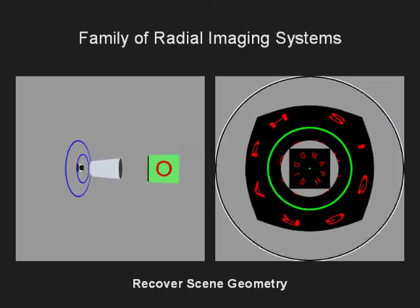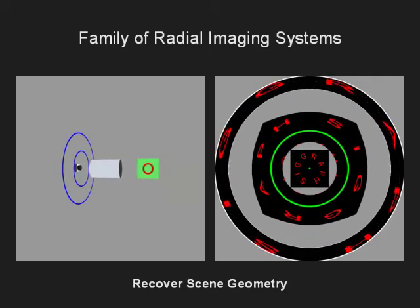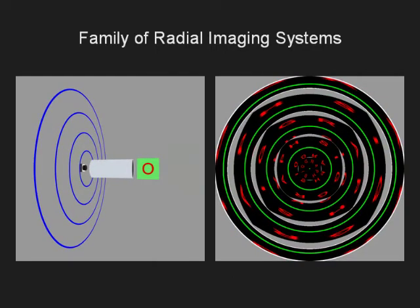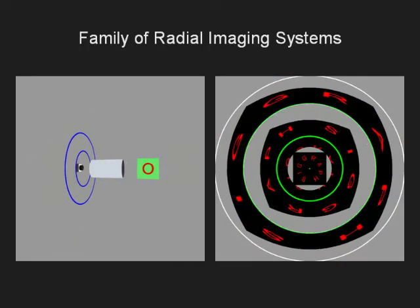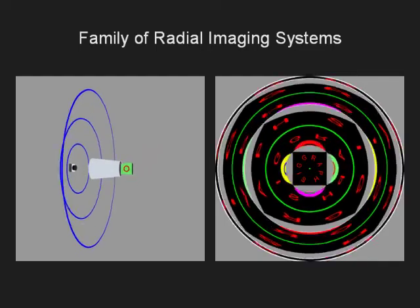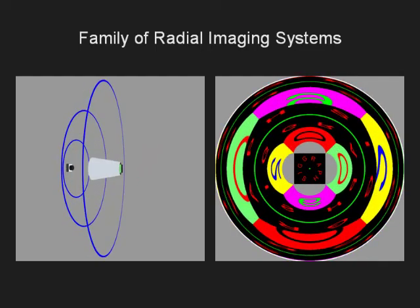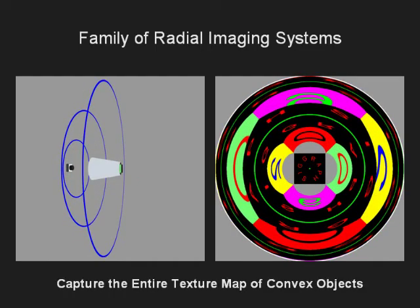When the mirror becomes cylindrical, the system becomes more suitable to recover the geometry of smaller nearby objects. If we extend the cylinder, we see that the green center point on the top face is imaged by multiple circular loci of virtual viewpoints, which allows us to estimate the BRDF of that point. When the mirror becomes a flipped cone, the captured image includes five sides of the cube, allowing us to capture a texture map of the entire object.